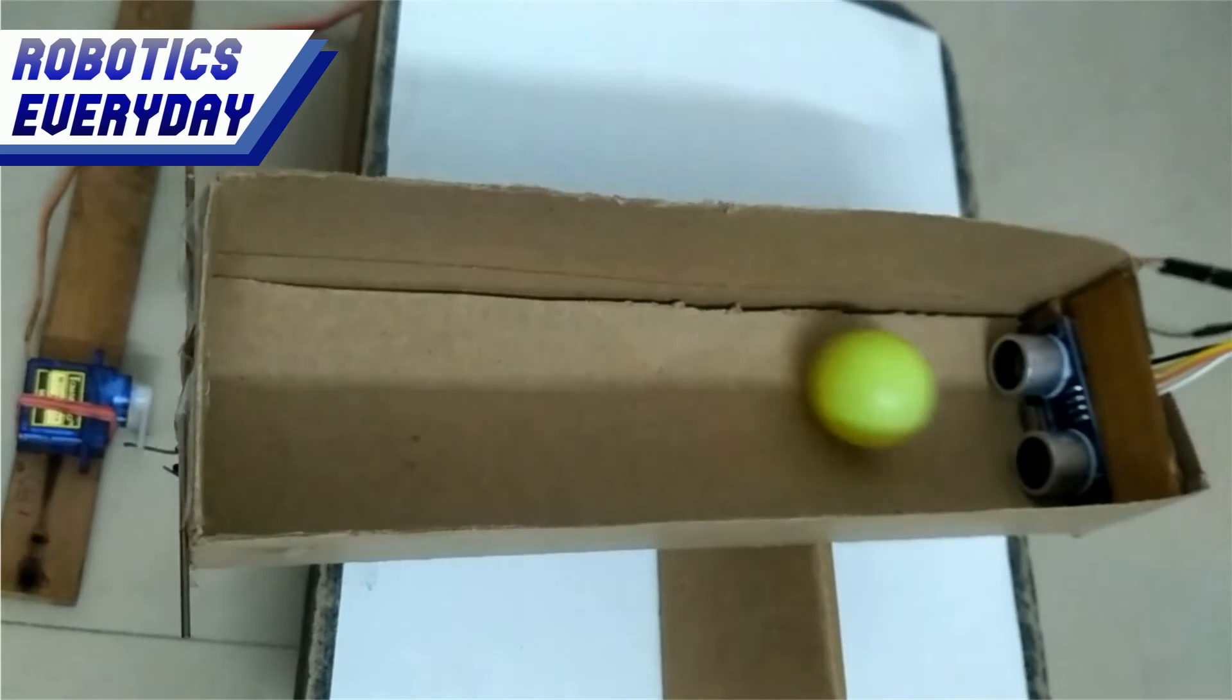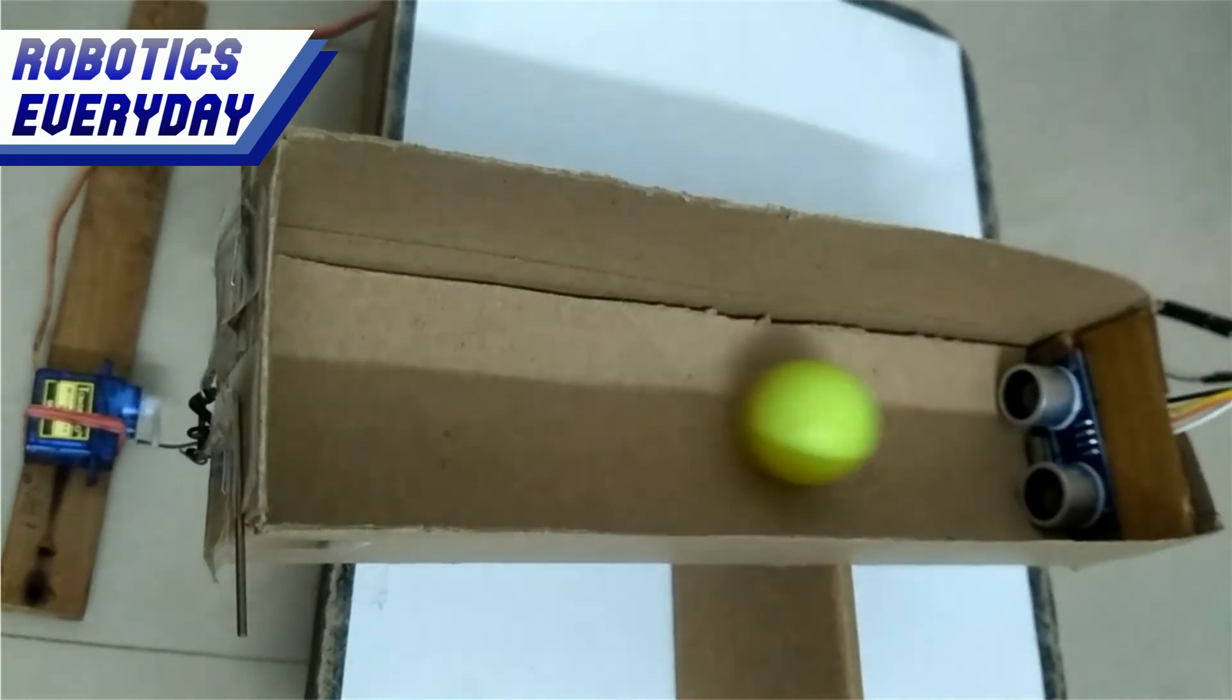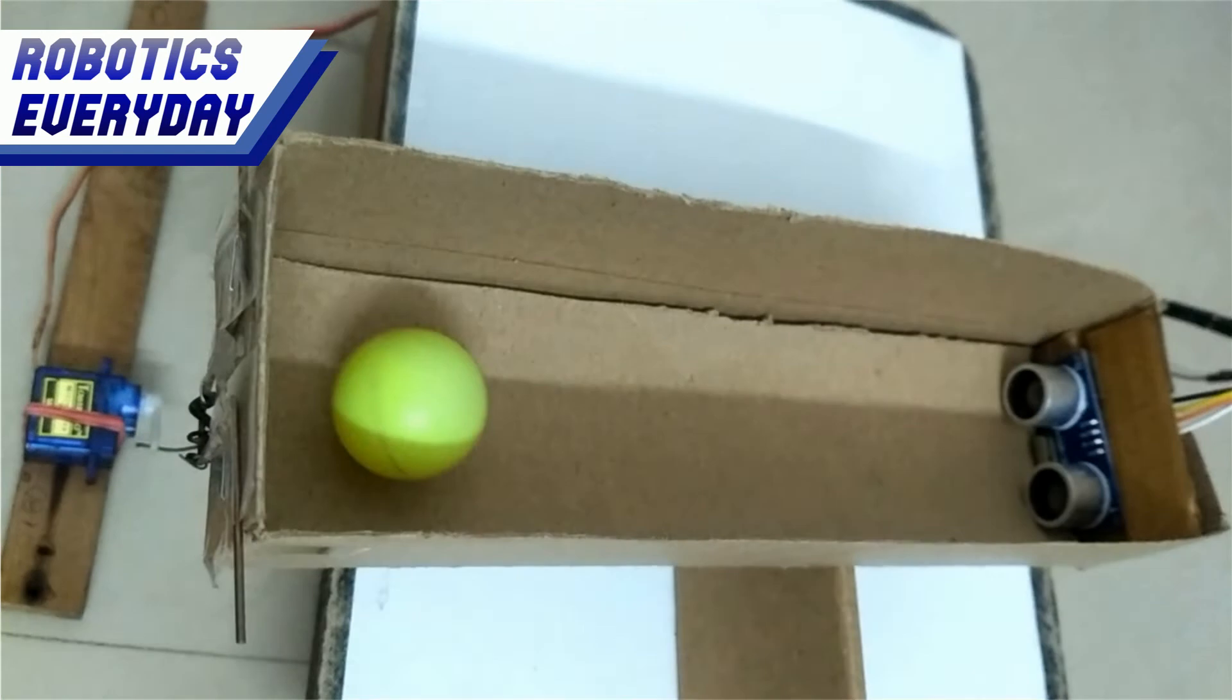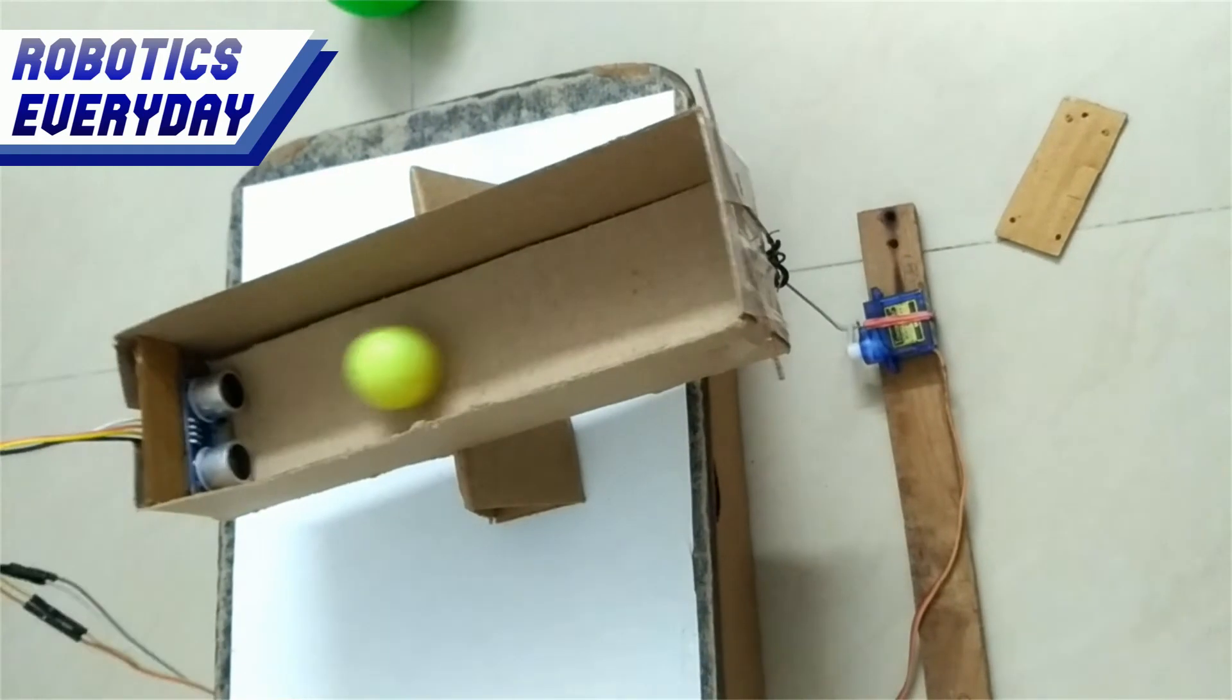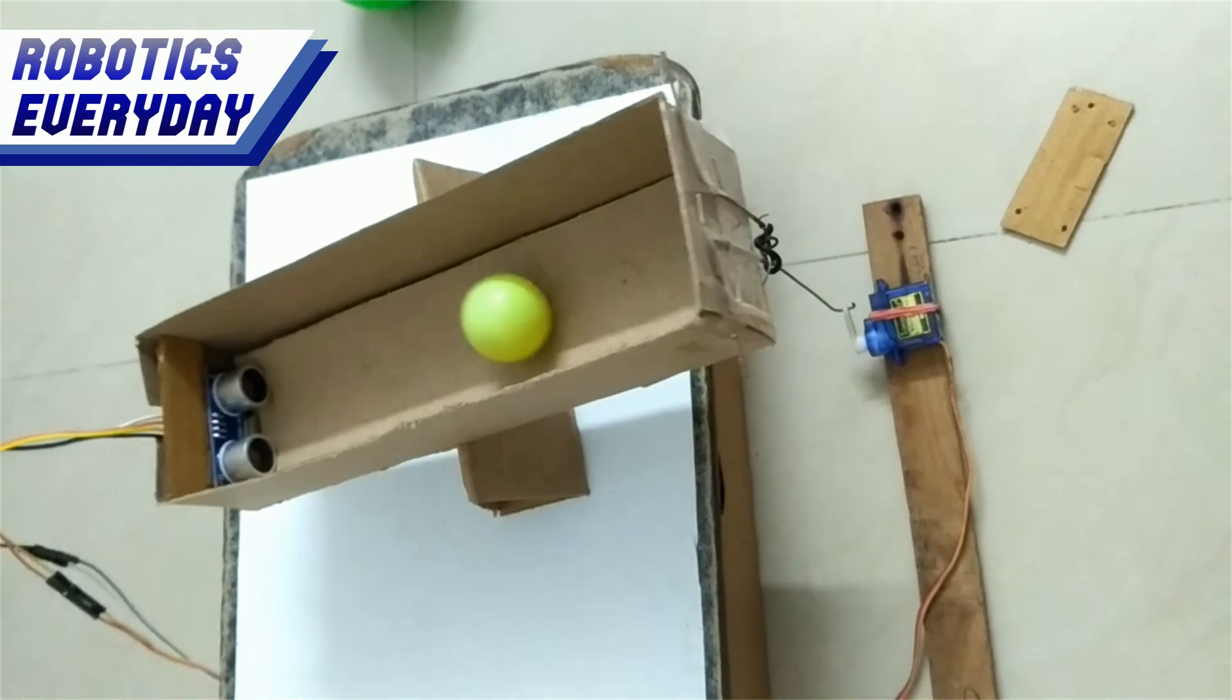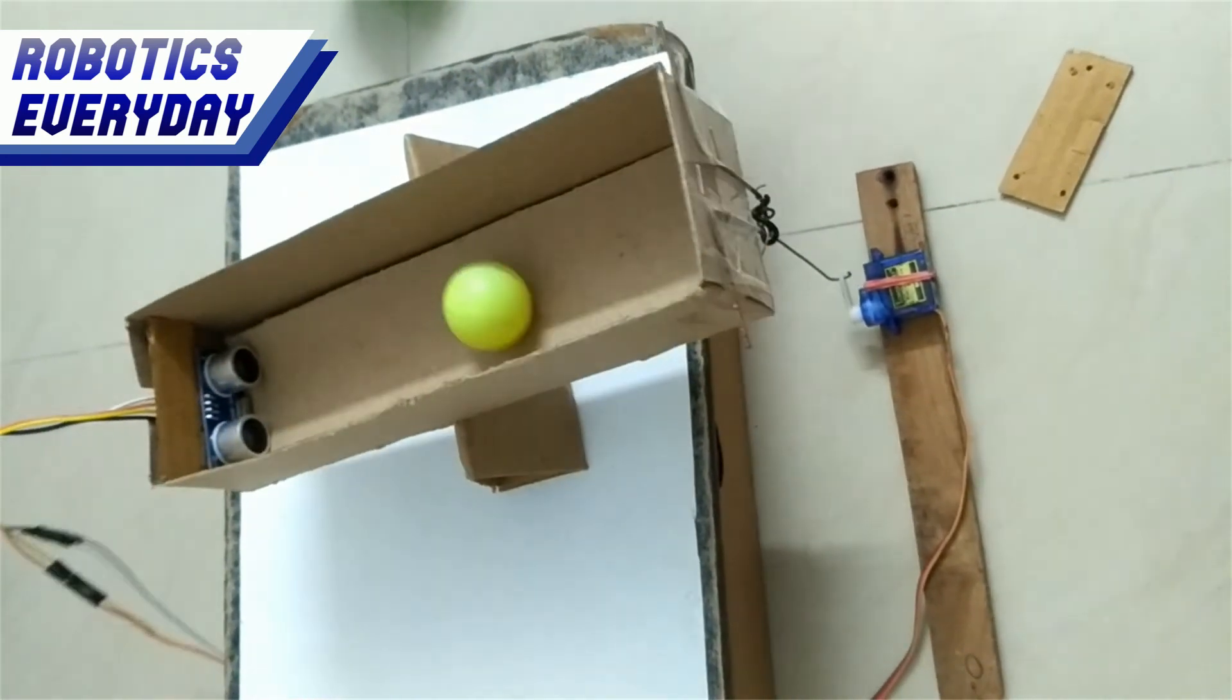The concept of the ball balancing robot is simple. The ball must remain in the middle of the box. If it rolls towards the left, then the box is raised from the left so that it rolls down the other end. And if it rolls towards the right, then the box is raised from the right. This process repeats until the ball gets in the middle, gets stable, and stops.